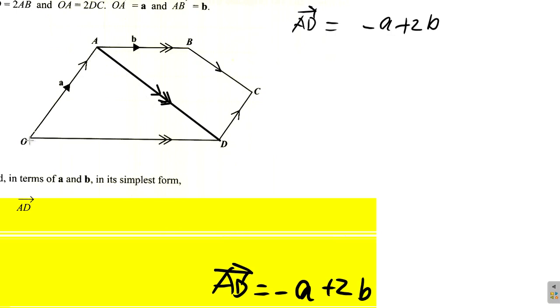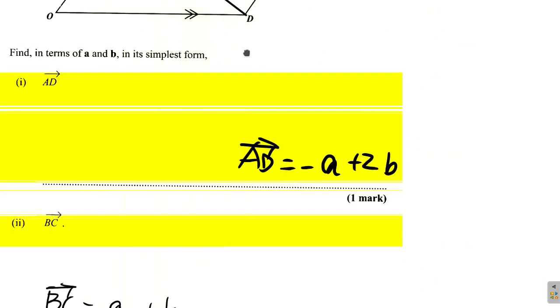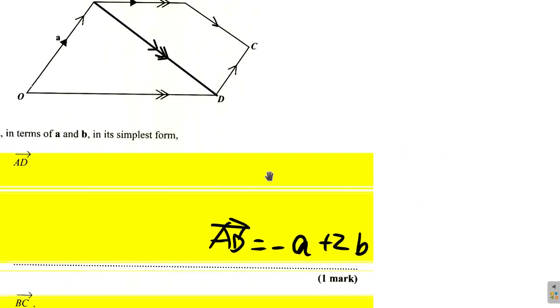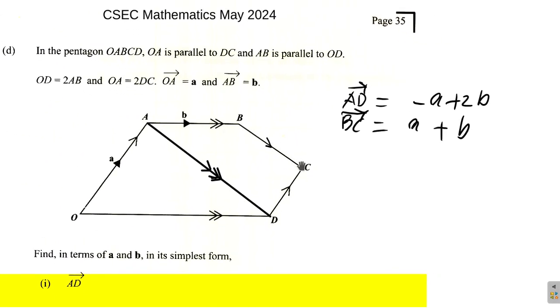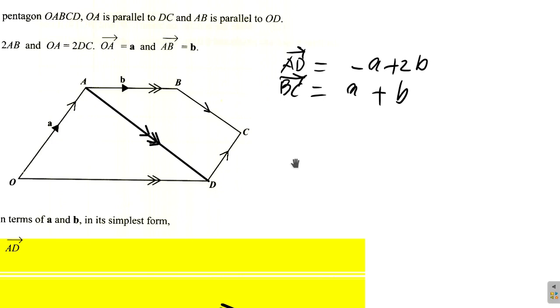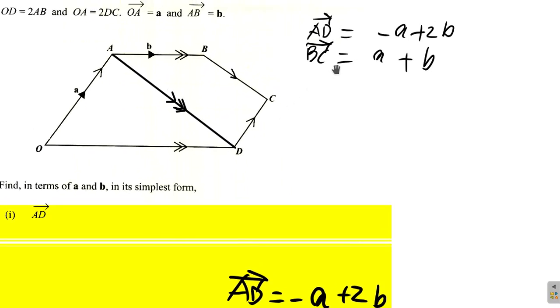Remember, negative a plus 2b. And then what does it say? BC. BC is a plus b. Now here, AD plus b. So here we have AD, negative a plus 2b, and we have BC which is a plus b.